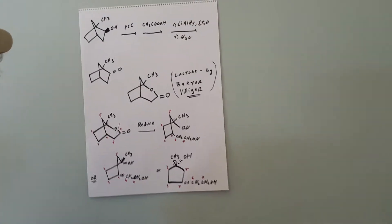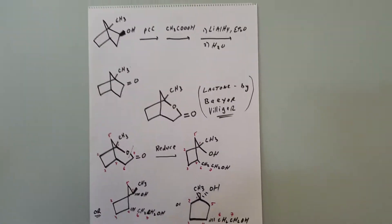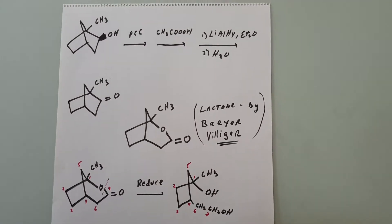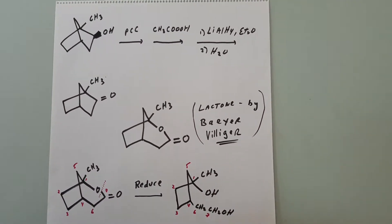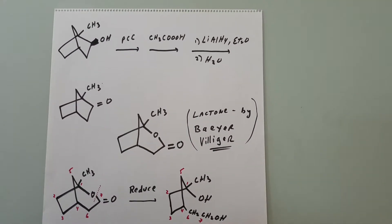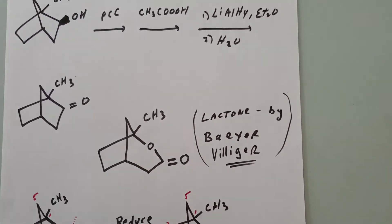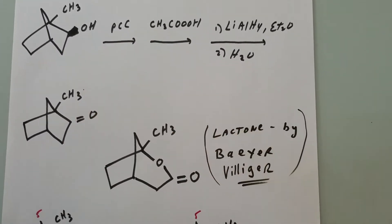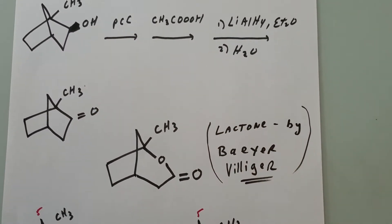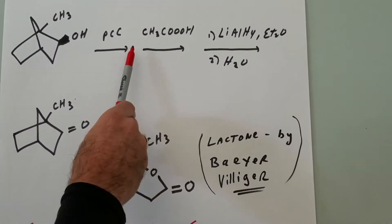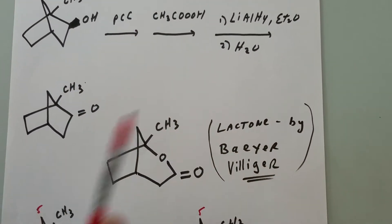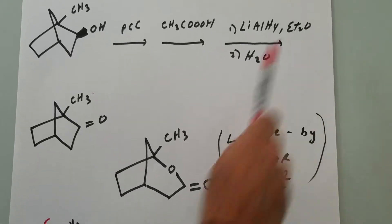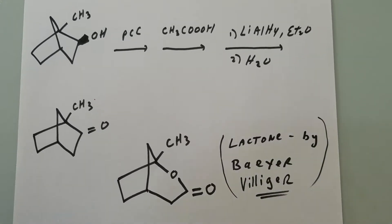Absolutely, Dr. Romano. I want a 30. I want you to look at what's here. We're going to do a sequence, and we need to do three things. On the DAT, they're going to write three arrows, and after each arrow, we're going to write down what the product is until we get to the final.